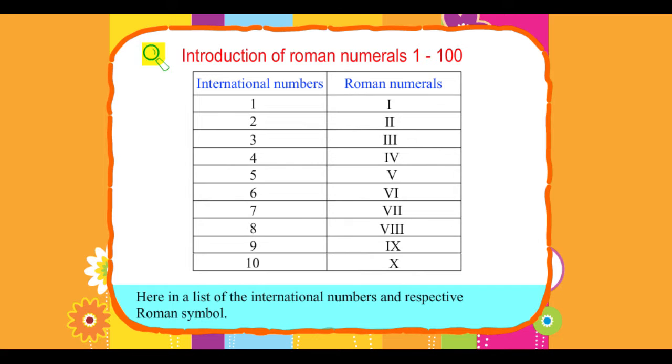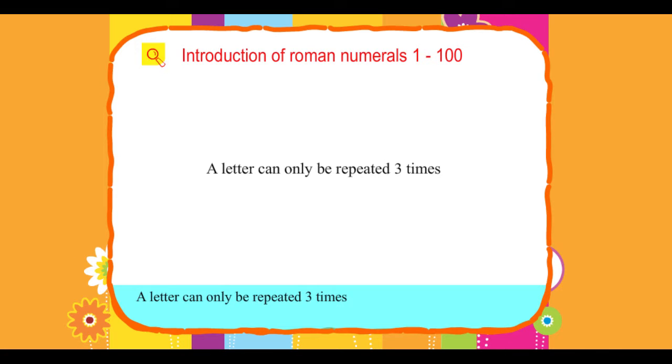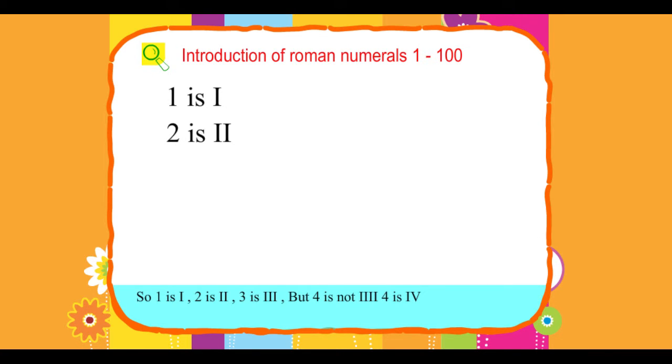Rule 1: A letter can only be repeated three times. So 1 is I, 2 is II, 3 is III, but 4 is not IIII. 4 is IV.